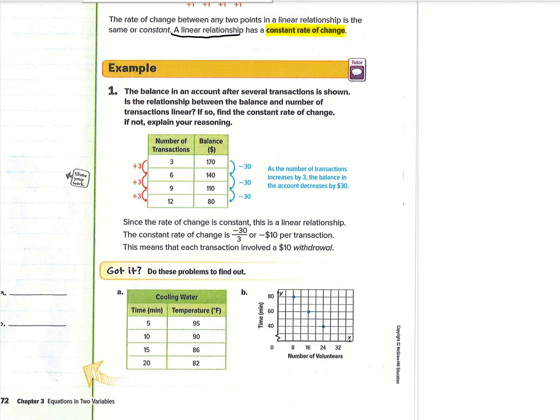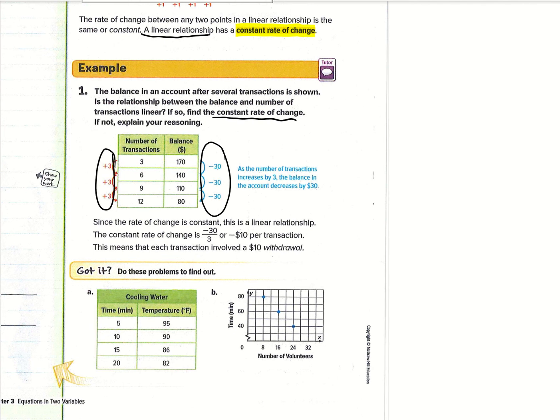Example one, this one is like a banking one. The balance in an account after several transactions is shown. Is the relationship between the balance and number of transactions linear? If so, find the constant rate of change. If not, explain your reasoning. You can see these change by the same amount every time the X values do, and then the Y values are also changing by the same amount each time. This is an example of one that has a negative in the change for the Y value because it's going down rather than going up.